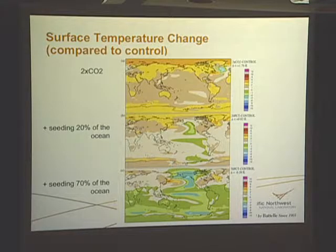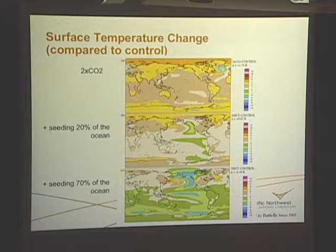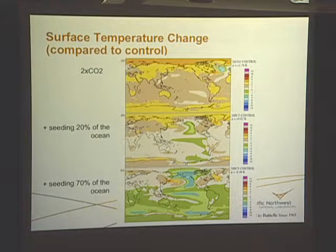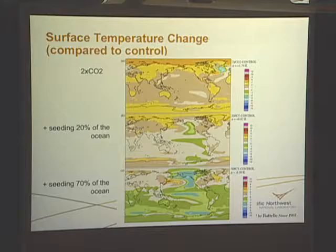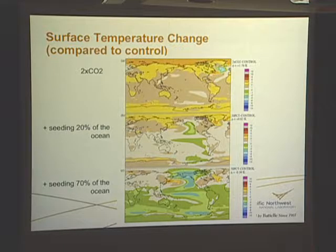Q: 70% of what — of the ocean? A: Yes, 70% of the ocean surface is being seeded, changed to 300 drops per cubic centimeter. Q: Even though there are not clouds there? A: If there is a cloud, it will have the value of 300 drops per cubic centimeter. So where there are clouds — that's right.